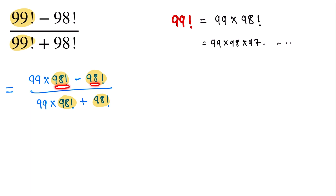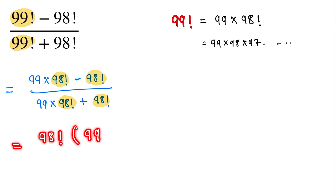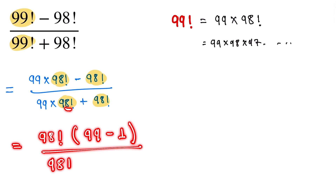Now 98 factorial is common in both the numerator and denominator, so we take out 98 factorial as a common factor. This gives us 98 factorial into (99 minus 1) in the numerator, and 98 factorial into (99 plus 1) in the denominator.